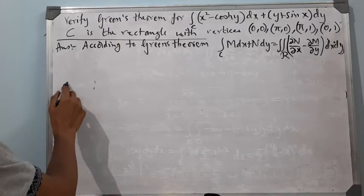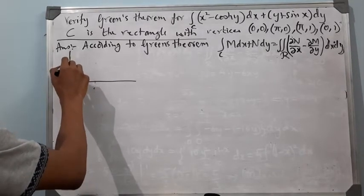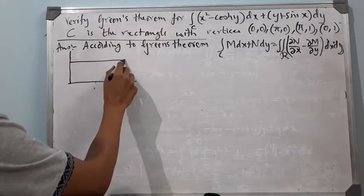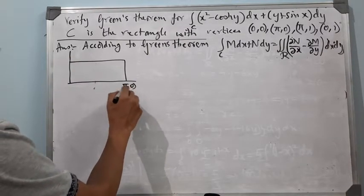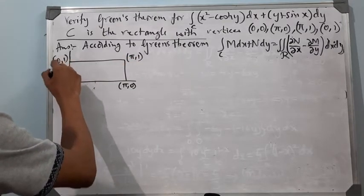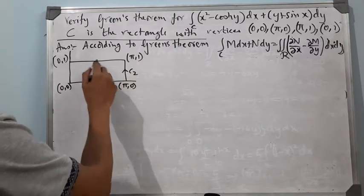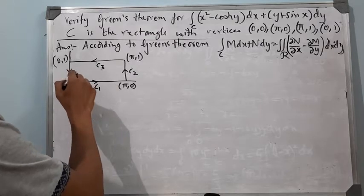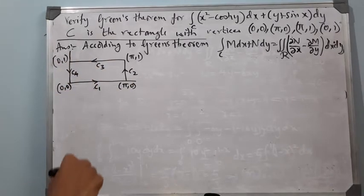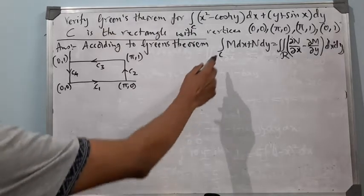So we draw the diagram. The vertices are at (π, 0), (π, 1), (0, 1), and (0, 0). The boundary consists of sides C1, C2, C3, and C4. The anticlockwise direction is to be taken, and when C1, C2, C3, C4 join end to end they give the complete curve C.